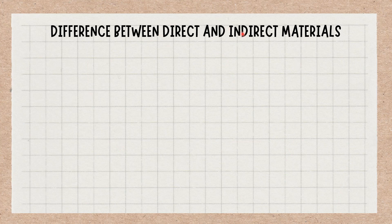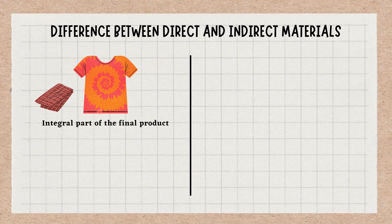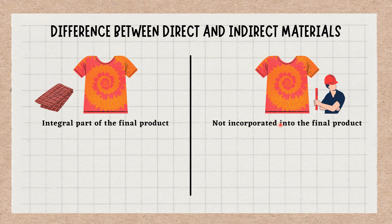What is the difference between direct and indirect materials? Direct materials are those materials that are used in the production of a product or service and become a part of the finished item. Indirect materials are those that support the production process but are not incorporated into the final product. The main difference is that direct materials are an integral part of the final product, while indirect materials do not become a part of the finished product.